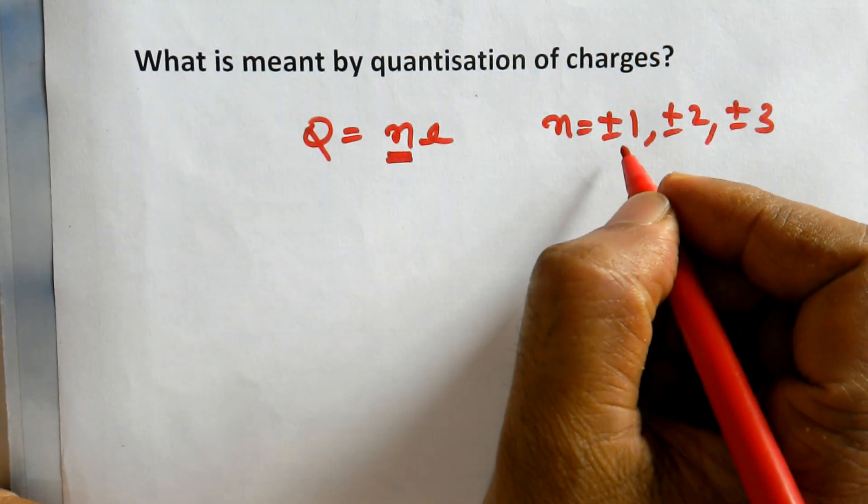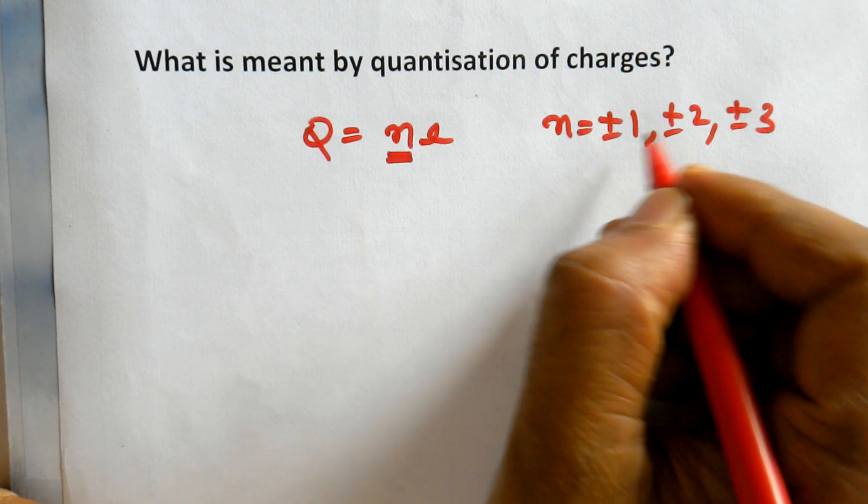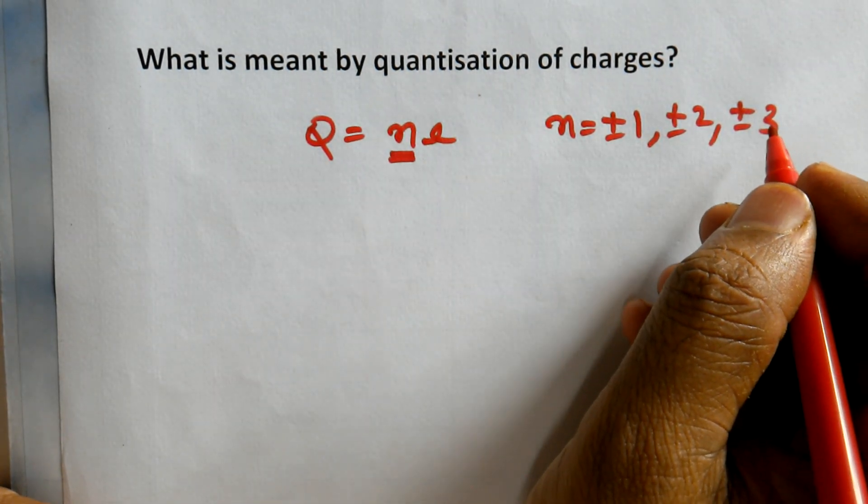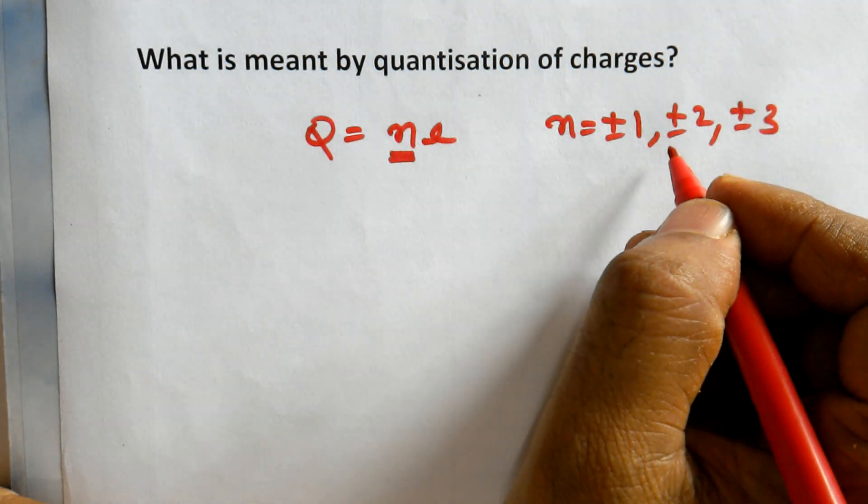n is always an integer, so you can remove one electron, two electrons, three electrons, and so on. There's nothing like removing 1.5 electrons or 1.33 electrons.